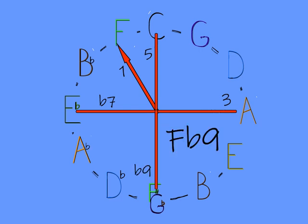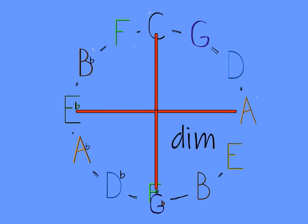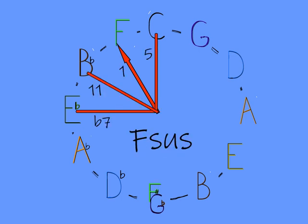The b9 is also the root note sharp and completes a diminished chord. The 11 is the same as the 4, so completes a sus chord.